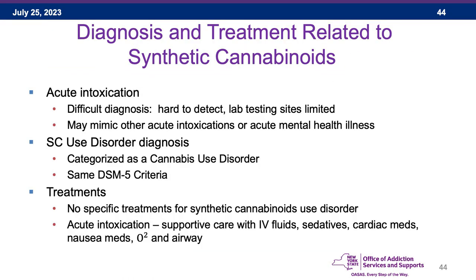Diagnosing acute intoxication from synthetic cannabinoids can be very difficult. These substances are hard to detect, lab testing is limited, and results may take two weeks. The acute intoxication syndrome may look like other types of intoxications or an acute mental health crisis. Synthetic cannabinoid use disorder is currently categorized as a cannabis use disorder using DSM-5 criteria. There are no specific treatments for synthetic cannabinoid use disorder. Acutely, supportive care is used: fluids, sedatives, heart medications, nausea medications, oxygen, and airway support if needed.